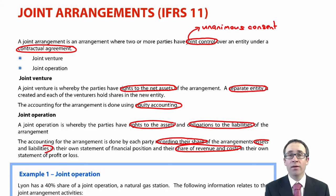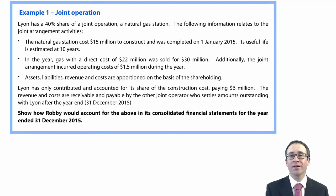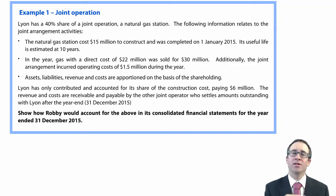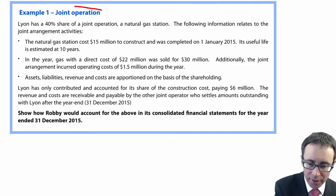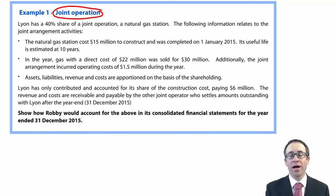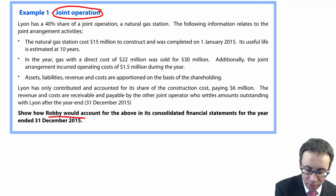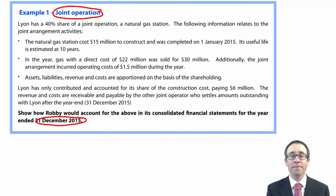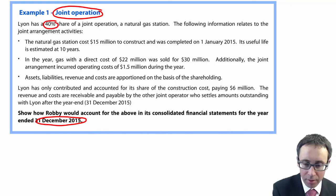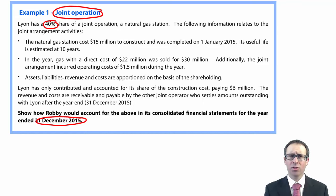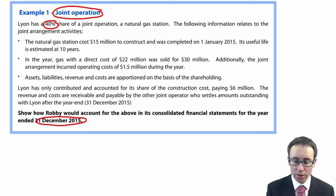Let's play around with the numbers. For a joint venture it's just equity accounting — your share of profit of joint venture in profit or loss, and investment in joint venture on the statement of financial position. We're more interested here in the joint operation. Leon has a 40% share of a joint operation which is a natural gas station as at 31 December 2015. Somebody else must have the other 60% share of that operation.